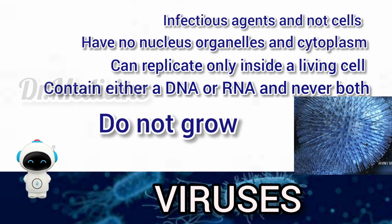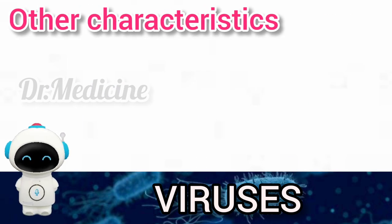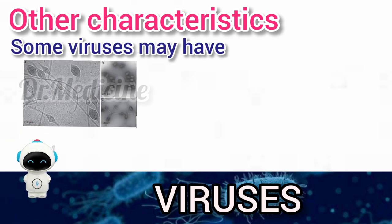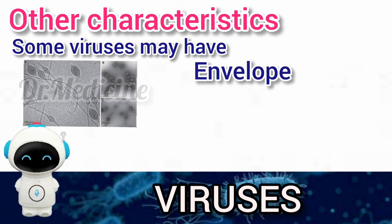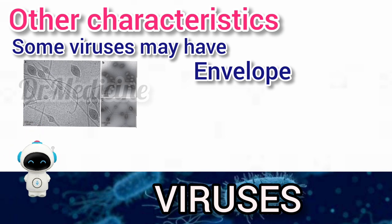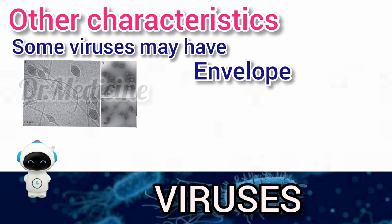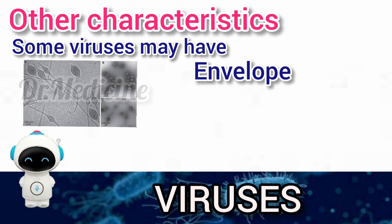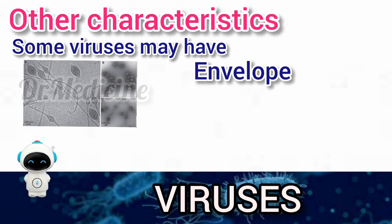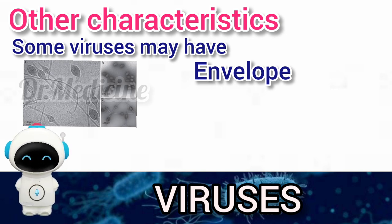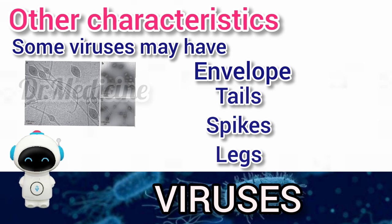Viruses do not grow. Other viral characteristics: some viruses have an envelope, which is a lipid-rich layer outside the protein coat. These proteins may help to infect cells — examples include HIV and flu. Some other viruses may contain tails, spikes, and legs.